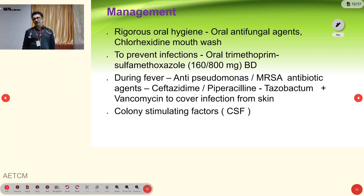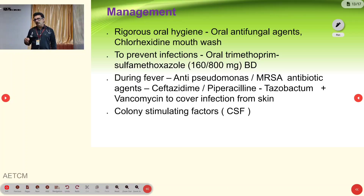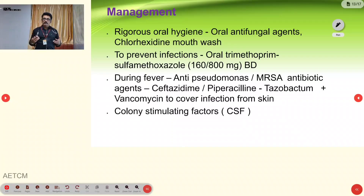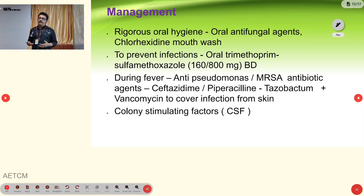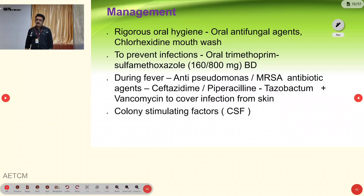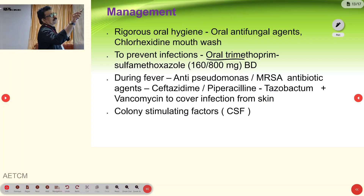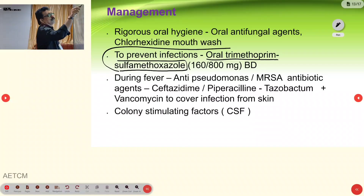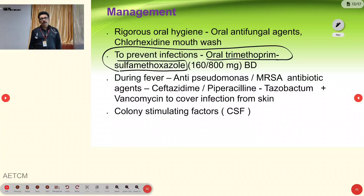In managing bone marrow suppression and risk of infection, oral hygiene is most important because bacteria present in the oral cavity can produce infections in the throat and lungs. According to recent guidelines, all patients on bone marrow suppression drugs or chronic immunosuppression such as steroids should receive PCP prophylaxis with trimethoprim-sulfamethoxazole to prevent PCP pneumonia.